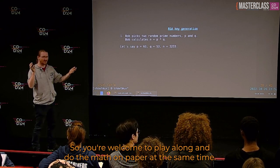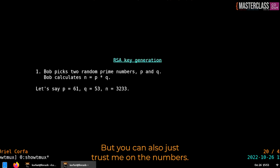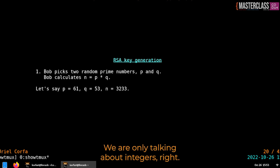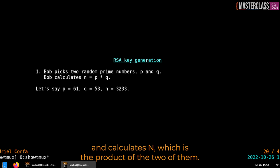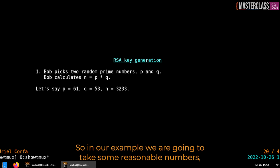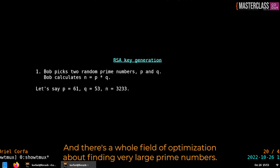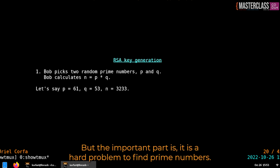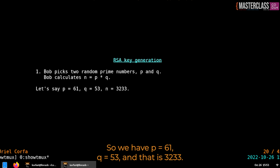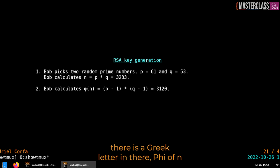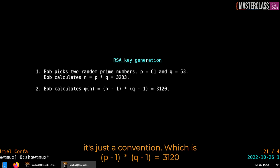This is the RSA algorithm, invented in 1977 by Ron Rivest, Adi Shamir, and Leonard Adleman — RSA are their initials. Bob picks two random prime numbers, p and q (numbers divisible only by themselves and one). He calculates n, which is their product. In our example, p = 61, q = 53, so n = 3,233. Bob then calculates phi(n), which is (p−1) × (q−1) = 3,120.